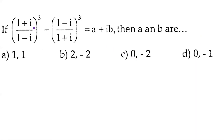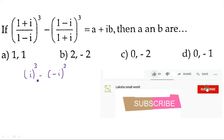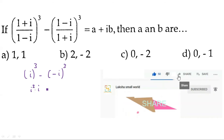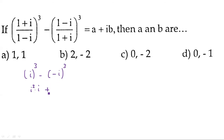Next problem: ((1+i)/(1-i))^3 - ((1-i)/(1+i))^3 = a + ib. Since (1+i)/(1-i) = i, this becomes i^3. And (1-i)/(1+i) = 1/i = -i, so the second term is (-i)^3. Now i^3 = i²×i = -i. And (-i)^3 = i² × i = -i.